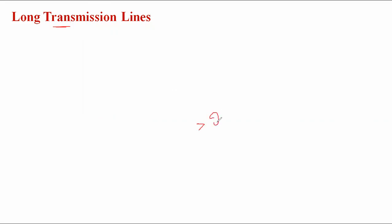Today I am going to discuss about the long transmission line. The performance of a transmission line is based upon the operating voltage and line length. It is classified into short transmission line, medium transmission line, and long transmission line. In the long transmission line, the line length is greater than 240 kilometers and the operating voltage is greater than 100 kV — practically for 132 kV, 220, 400, and 765 kV transmission lines.